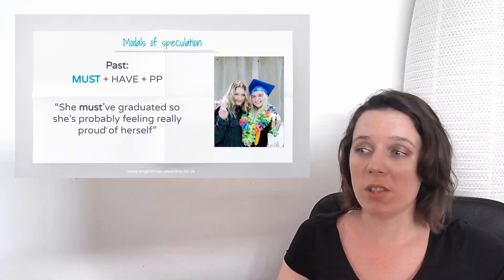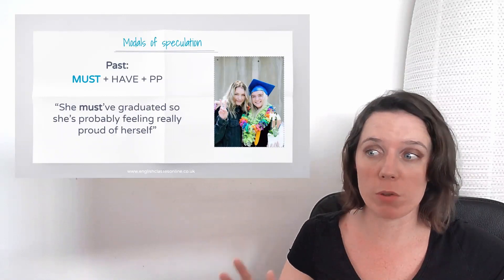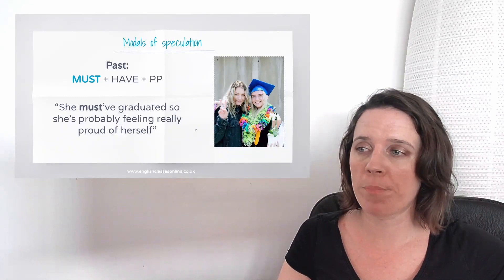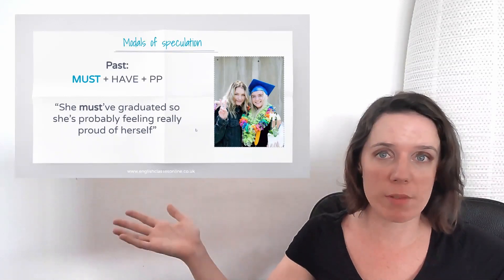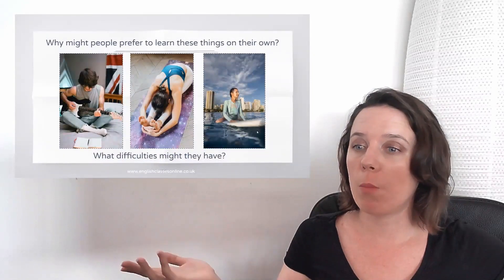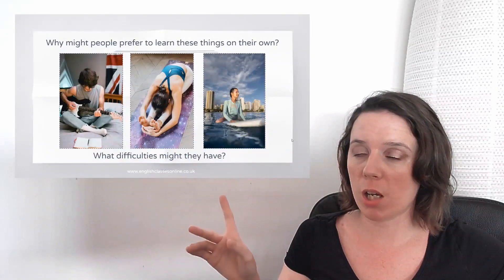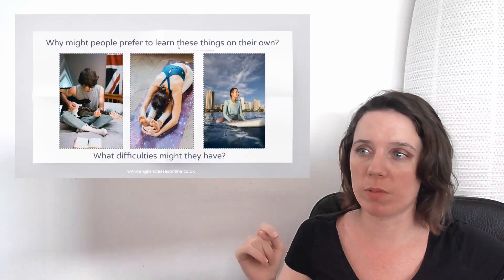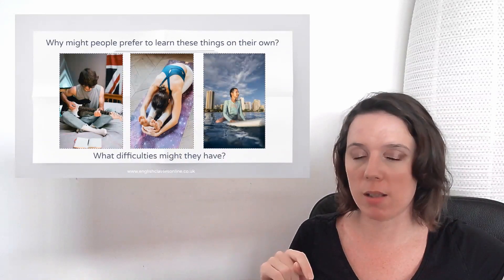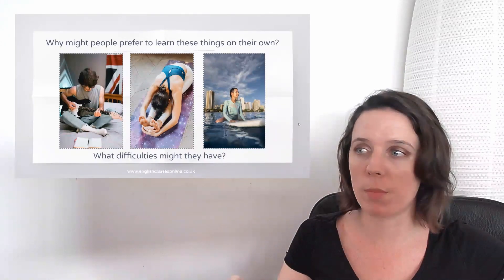Again, you could even say must be feeling really proud of herself. If you're a hundred percent sure, then that's fine. So in the past, we use have and a past participle. If again, we go on to this one, we've seen this a few times now. Why might people prefer to learn these things on their own? What difficulties might they have? Again, we're speculating with might.